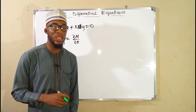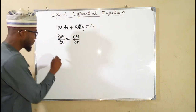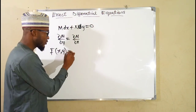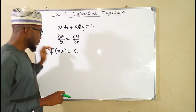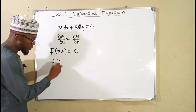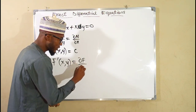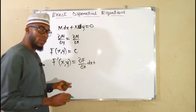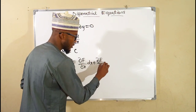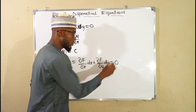To understand this clearly, let us refer back to implicit differentiation. In implicit differentiation, we differentiate a multivariable function — a function containing both x and y implicitly equal to some constant. To find the total derivative, we apply the general chain rule: the derivative equals the partial derivative of f with respect to x times dx, plus the partial derivative of f with respect to y times dy, and this equals zero, since differentiating a constant gives zero.